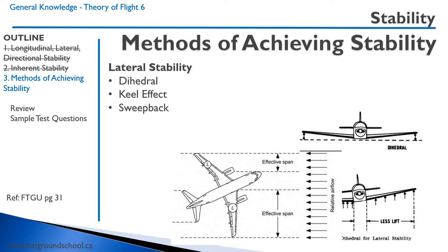Jet aircraft often have sweepback, whose primary purpose is to reduce transonic flow in high-speed aircraft, but it also has the effect of increasing stability — if a yaw is produced, the aircraft will return to nose-forward straight flight. However, this can also cause something called Dutch roll, which is beyond the scope of this course. These aircraft often have yaw dampers as well to prevent that.